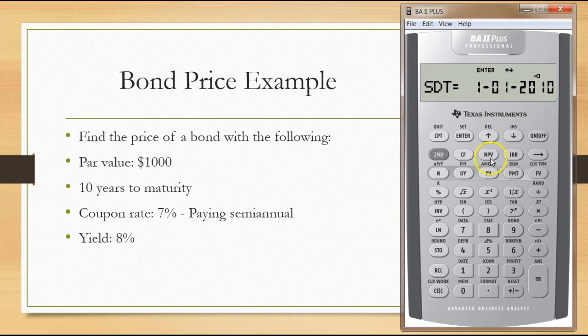A little trick to remember: we press 1 for the month, put a dot thereafter, 01 for the day, and the last two digits of the year, 10. Once we have that in, we hit enter. There's our settlement date in which we're buying this bond. We press the down arrow after that.